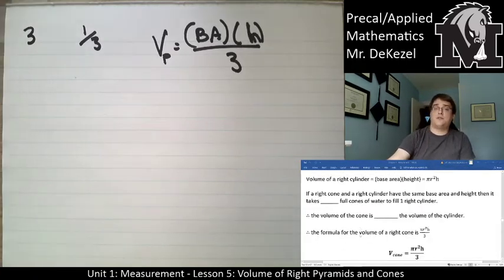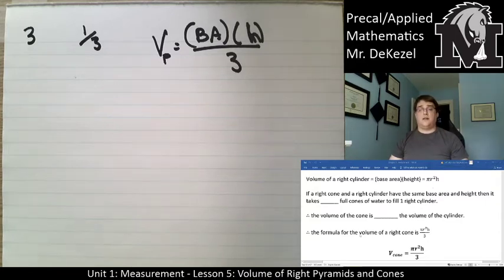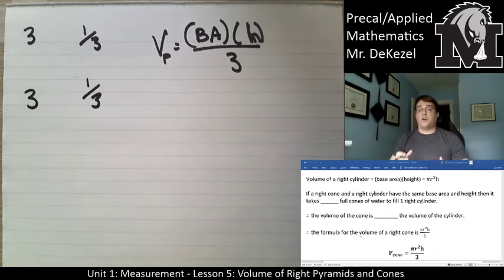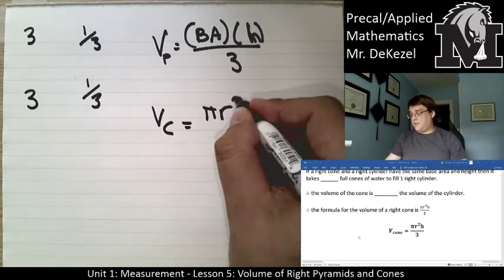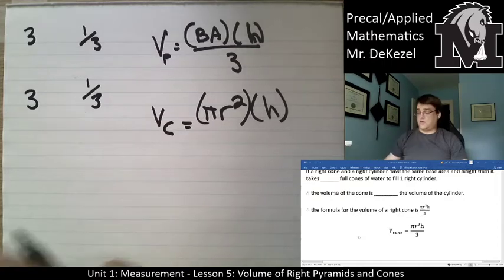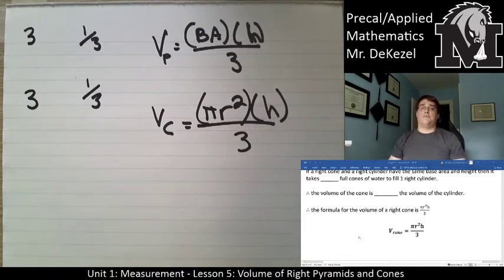We can do a very similar thing for the volume of a right cylinder. The volume of a right cylinder is equal to the base area — which is a circle — multiplied by the height, so it is πr² × h. If you take a cone with the same base and the same height, it would take three full cones of water to fill the cylinder. Therefore, a cone is one-third the volume of a cylinder: V = πr²h / 3, where the height goes from the apex to the middle of the base.